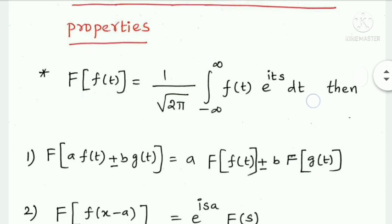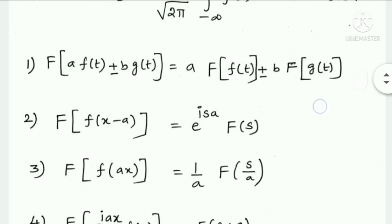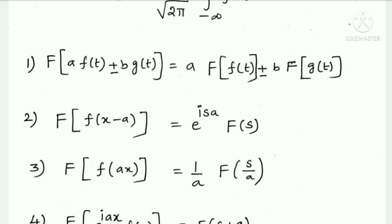The first property is the linearity (shifting) property: the Fourier Transform of A·f(t) ± B·g(t) equals A times the Fourier Transform of f(t) ± B times the Fourier Transform of g(t). The second property: Fourier Transform of f(x − a) equals e^(iSa) times F(S).